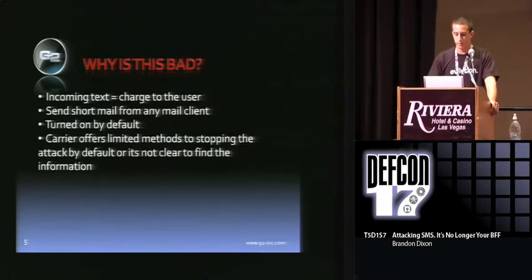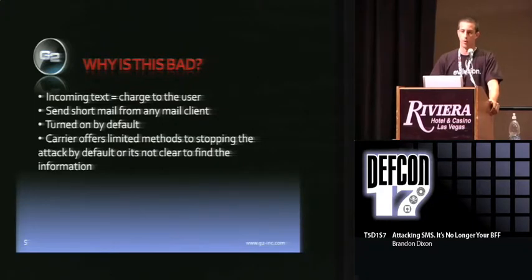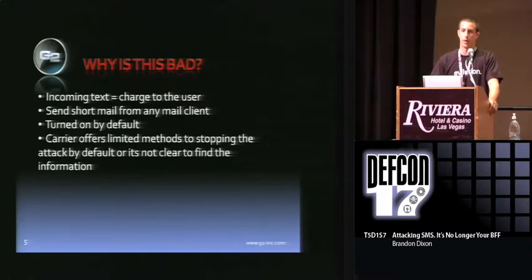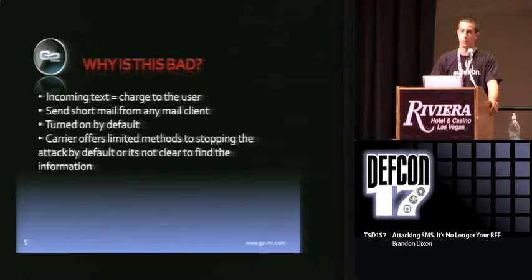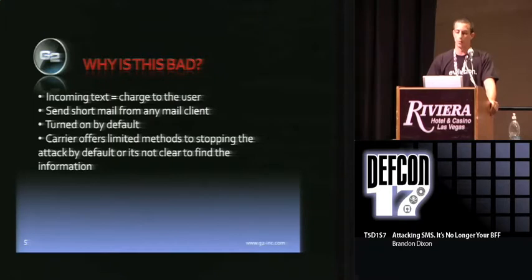So overall, why is this bad? An incoming text is a charge to a user, whether they want it or not — it's on by default. You can send the short mail from any client. It goes back to the standard spamming techniques and mass mailers in that nothing changes for them. Once someone is sending you these messages, they can instantly do it right from their standard mail client. This is a problem because it's turned on by default and most people don't even realize it.